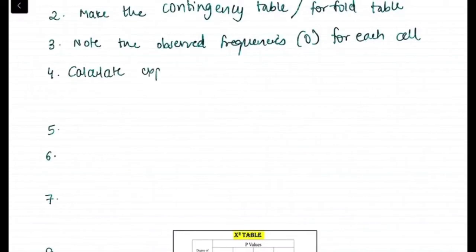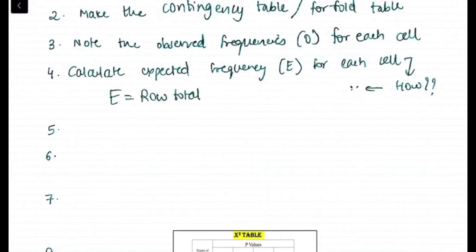Third step is note the observed frequencies for each cell, while fourth step is calculating the expected frequency for each cell. How we going to do that? E is equal to row total into column total upon grand total. This is the expected frequency.